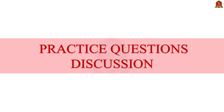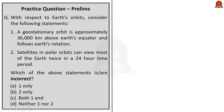We have arrived at the last part of today's discussion — the practice questions session. With respect to Earth's orbits, consider the following statements. Statement 1: a geostationary orbit is approximately 36,000 kilometers above Earth's equator and follows Earth's rotation — this is correct. Statement 2: satellites in polar orbits can view most of the Earth twice in a 24-hour time period — this is also correct. But since we are supposed to identify incorrect statements, the correct answer is option D: neither one nor two.